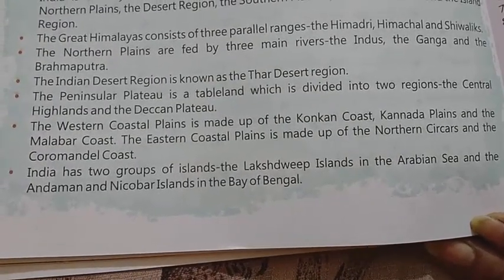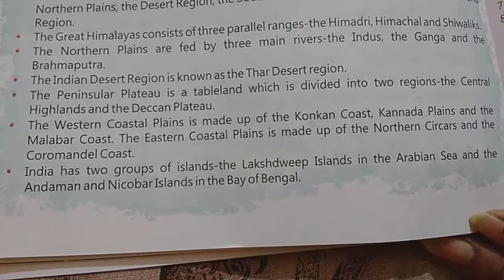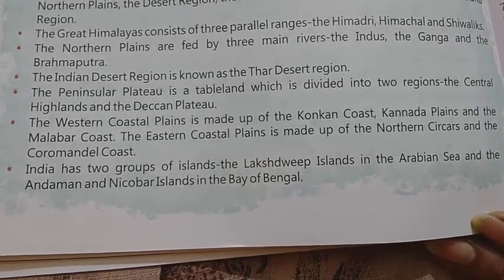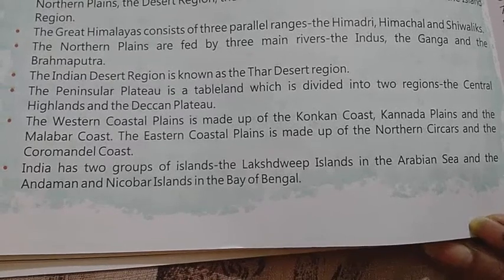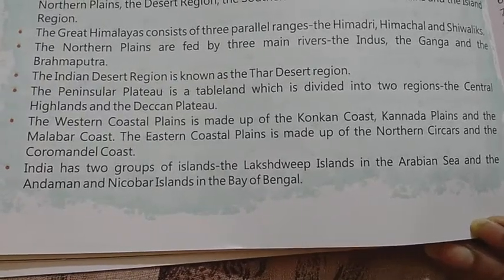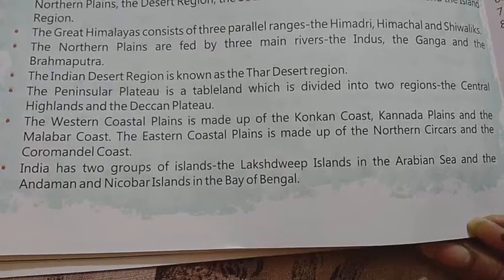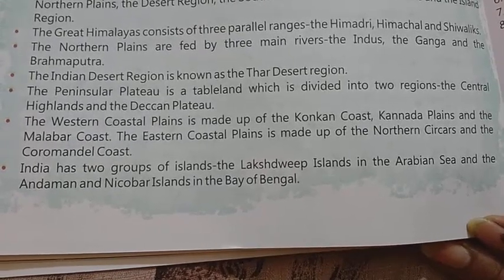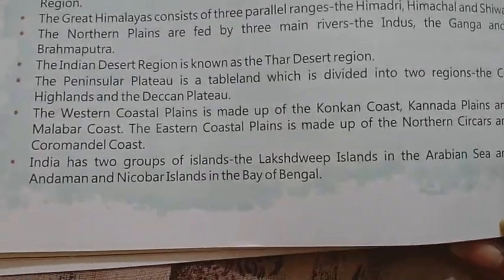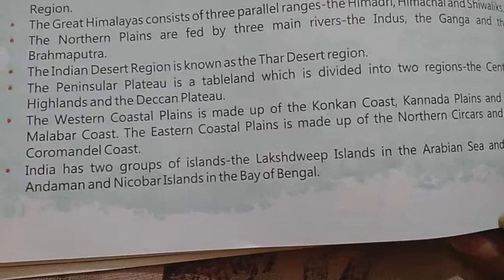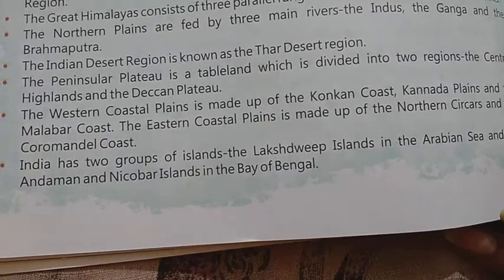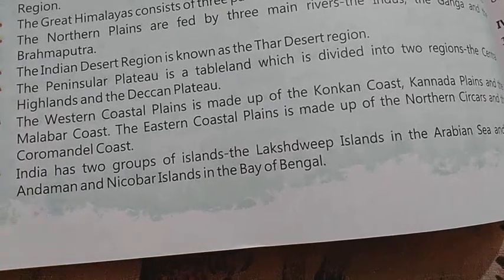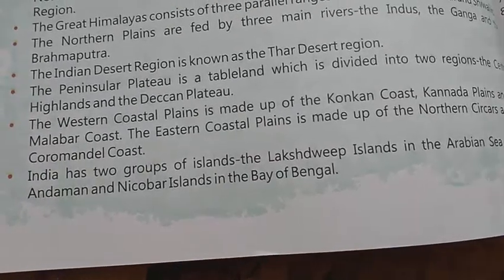The western coastal plains are made up of the Konkan coast, Kannada plains, and the Malabar coast. The eastern coastal plains are made up of the Northern Circars and the Coromandal coast. India has two groups of islands: the Lakshadweep islands in the Arabian Sea and the Andaman and Nicobar islands in the Bay of Bengal. Today I'll go through the objective type question answers.